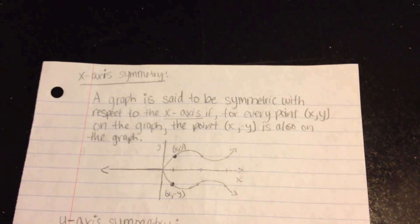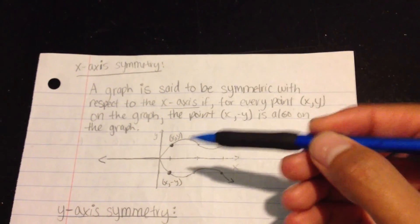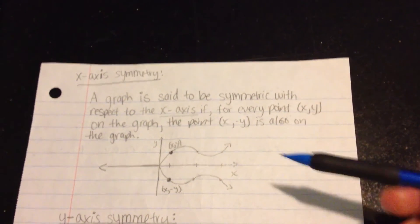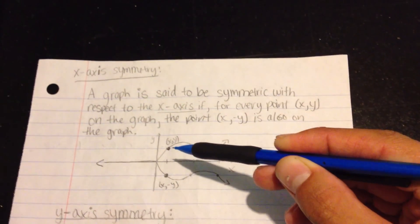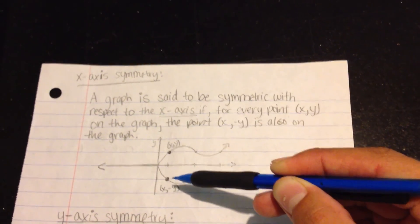So, for x-axis symmetry, a graph is said to be symmetric with the x-axis if for every point (x, y) on the graph, the point (x, negative y) is also on the graph.